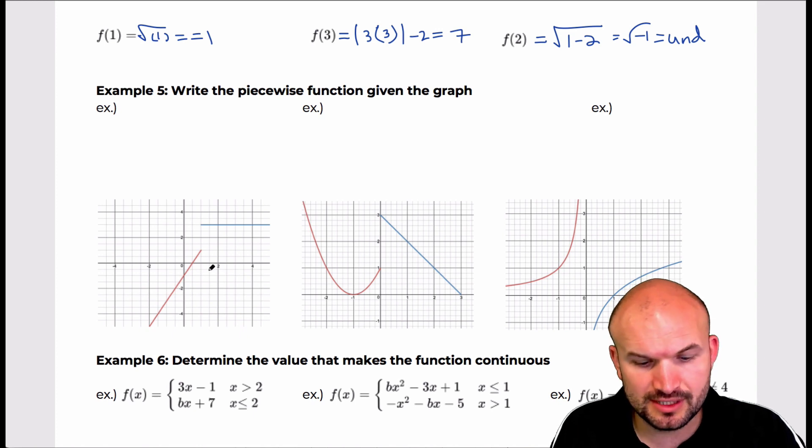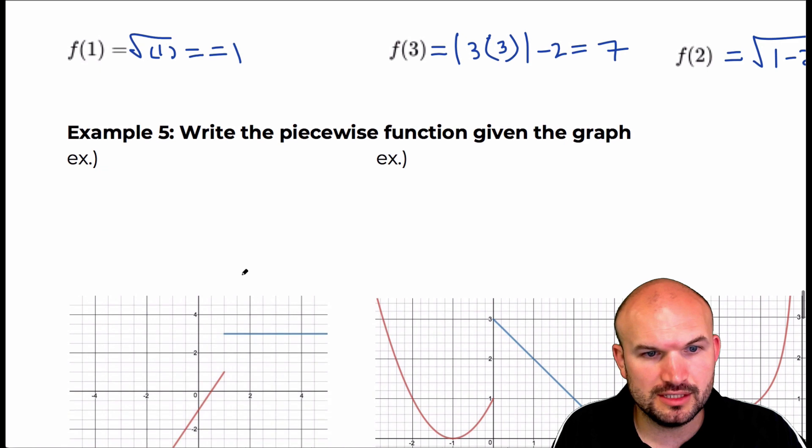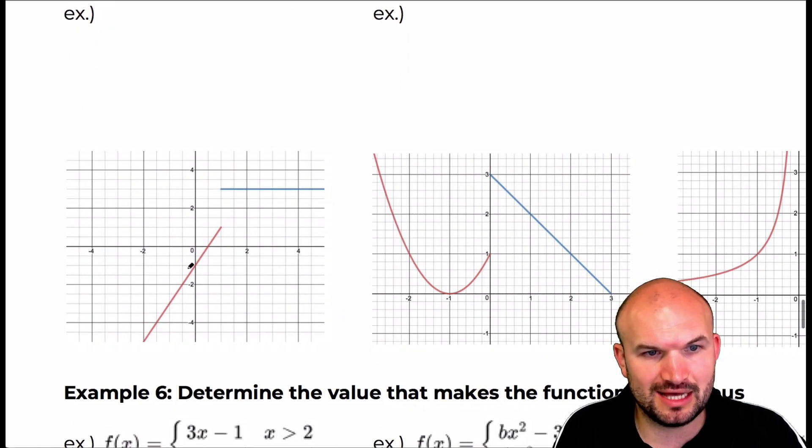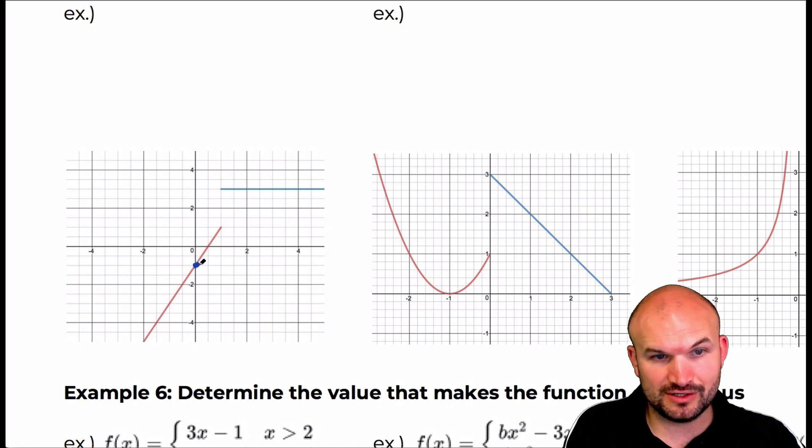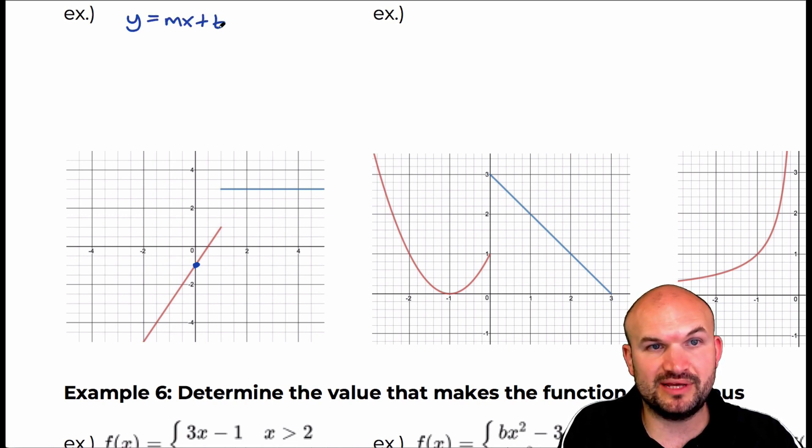So, on the first example here, we are going to zoom in, so we can kind of get an idea. So, we can see we have a line here, and when we're looking at a line, we're looking at a couple different things. We're looking at the y-intercept here, which is negative two. So, we can say, if we have an equation of a line, y equals mx plus b. We can see that b is going to equal negative two.